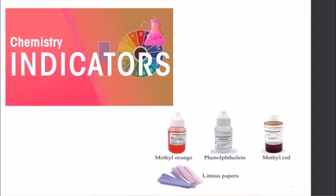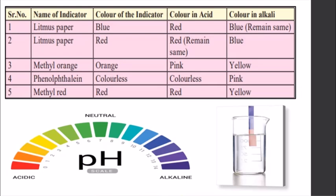These indicators change color when added to an acid or a base. For example, methyl orange is orange in color, but when we add methyl orange to an acid it turns pink, and when we add it to a base it turns yellow. From that we can tell: if the solution turns pink, it is an acid; if it turns yellow, it is a base. In this way, indicators play a very important role in identifying whether a substance is an acid or a base.